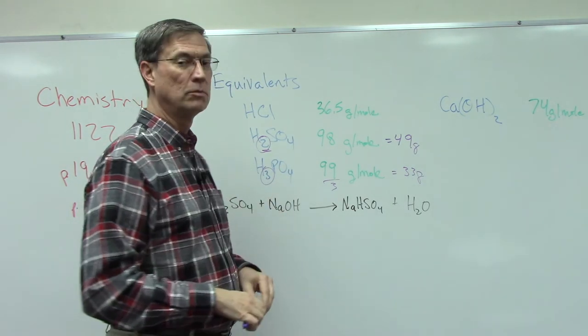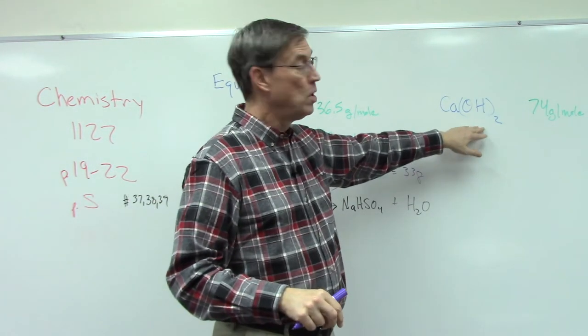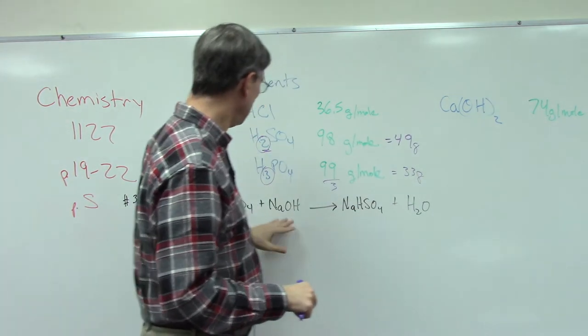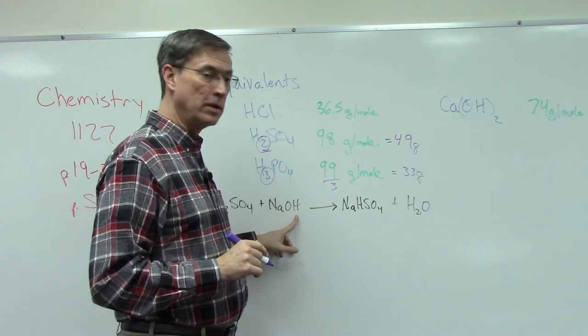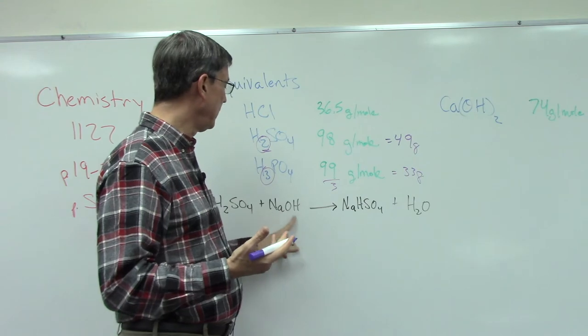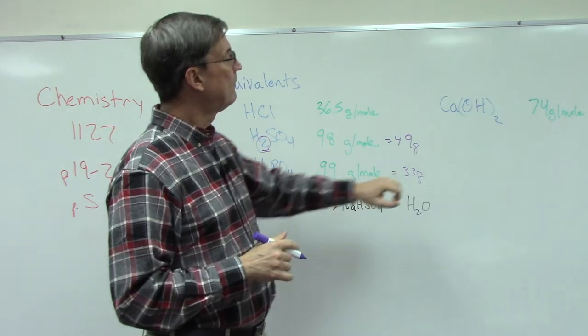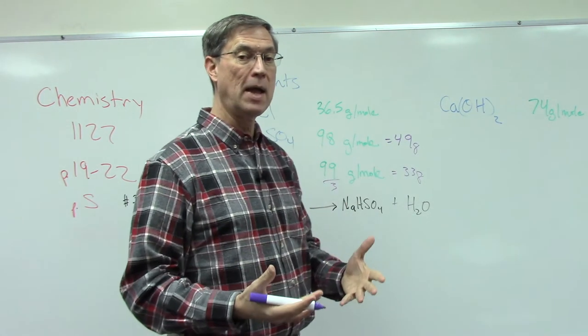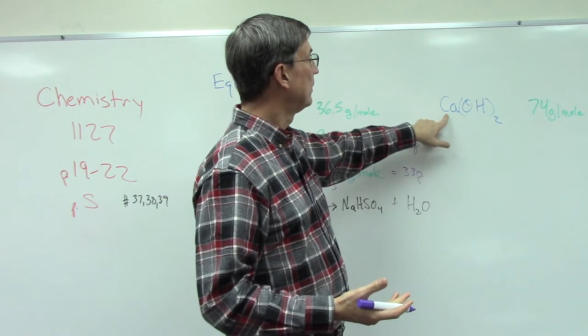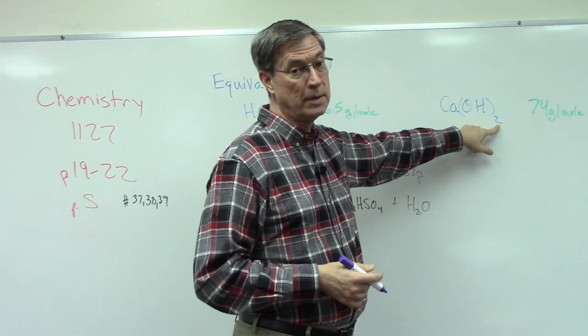Now the same thing can happen when we're dealing with bases. So notice this base, this one only has one hydroxide ion. When it dissolves, it produces one mole of NaOH produces one mole of hydroxide. But if I have calcium hydroxide and I dissolve that, then in solution I have one mole of calcium but I end up with two moles of hydroxide.